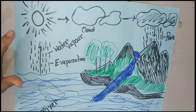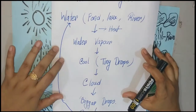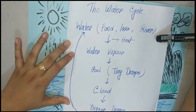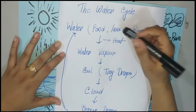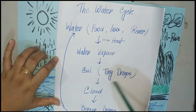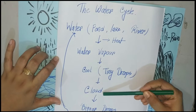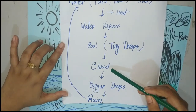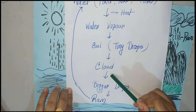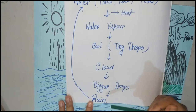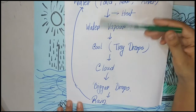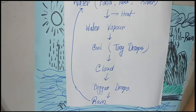Let's review today's chapter. We learned about the water cycle in nature. First, the water of ponds, lakes, and rivers is heated by the Sun and becomes water vapor. When this water vapor rises up in the air it cools and forms tiny drops. These drops join together and form clouds. When the cloud cools further, the drops grow bigger, become heavy, the cloud can't hold them, and it starts raining. The rain water then fills up the ponds, lakes, and rivers again — and this is the water cycle.